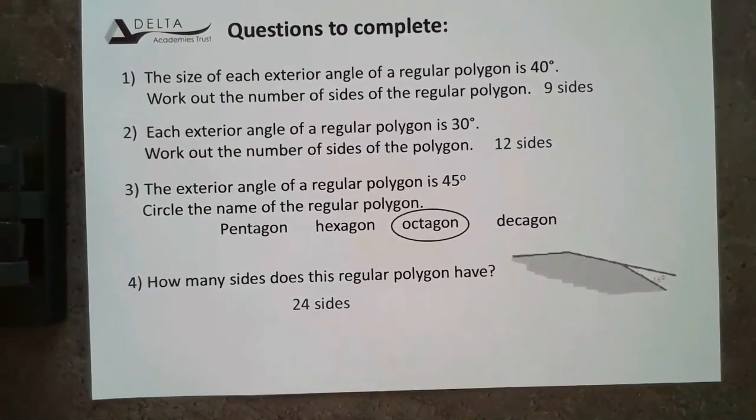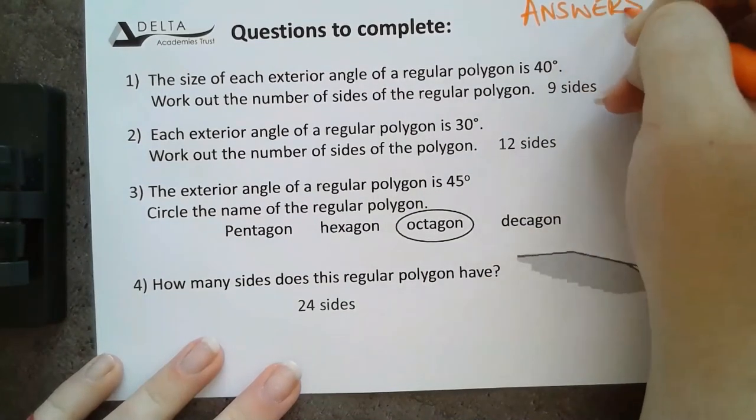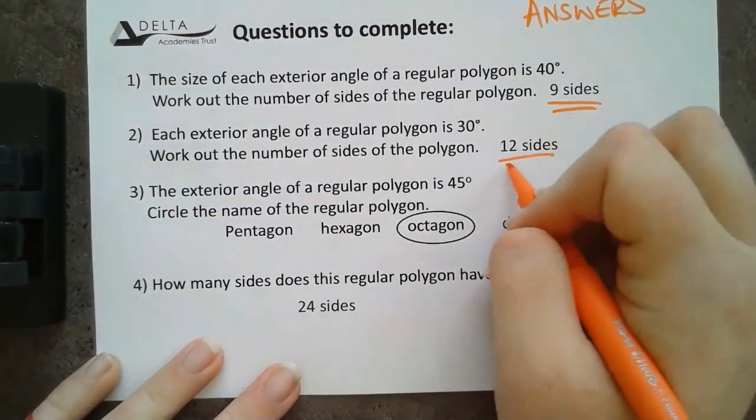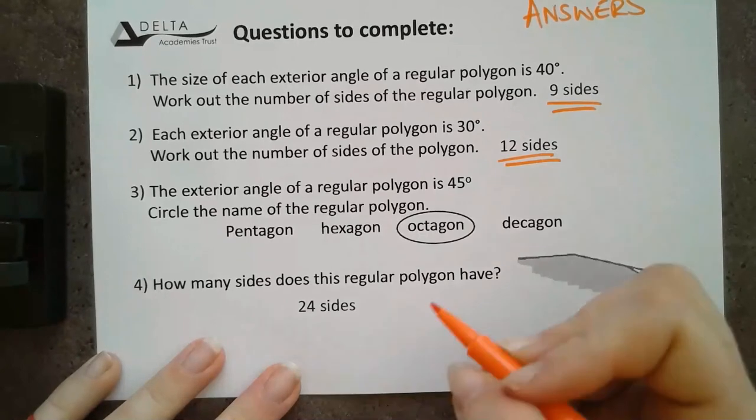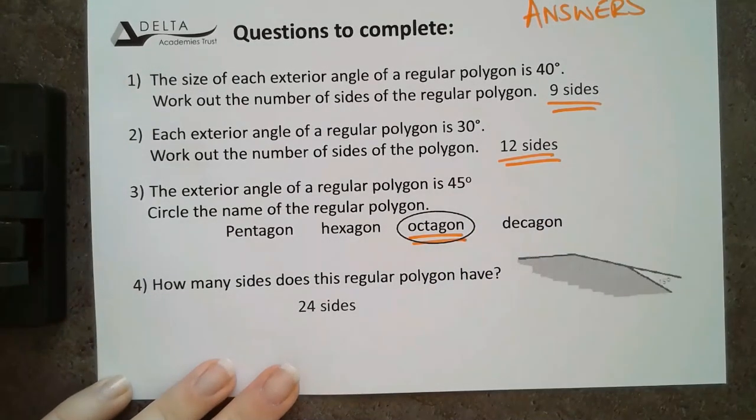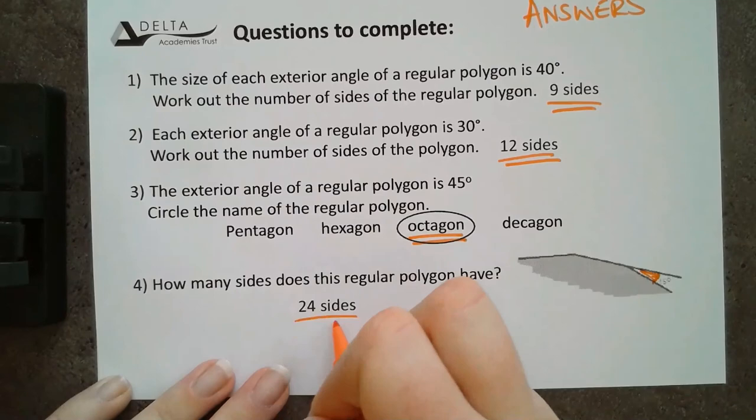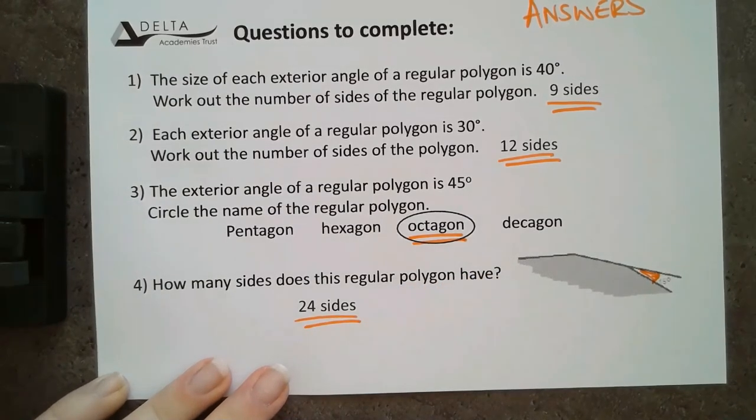So, your answers are just here. We should have had 9 and 12 sides. Working backwards would have given us 8 to get an octagon. And then, looking here at that 15 degrees that's in your image, we should have worked backwards to find that it had 24 sides.